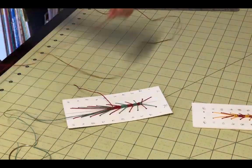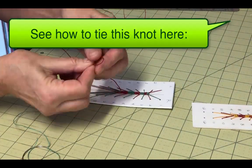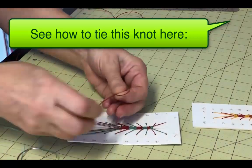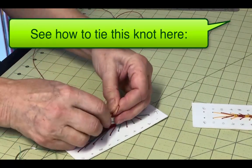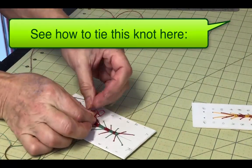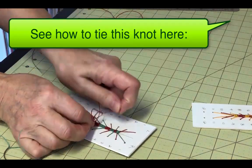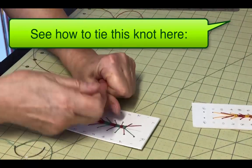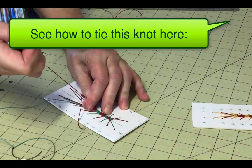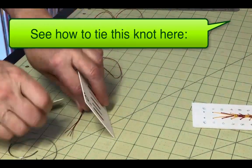This stitch uses up tons of threads, so you'll be attaching new thread often. I try to do it in a way so I can hide the knots, either on the underside of the body segments or on the back side of the board. The knot I like to use is shown in a video you can find here. It creates a nice tight knot that you can position wherever you want.